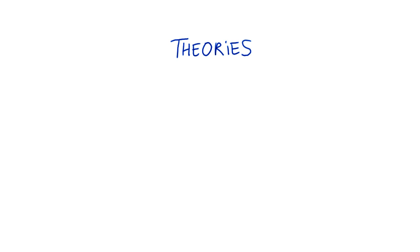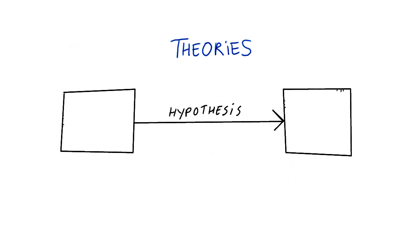Whenever we visualize these statements, this is called a model. Usually the arrows and lines in these models represent hypotheses.